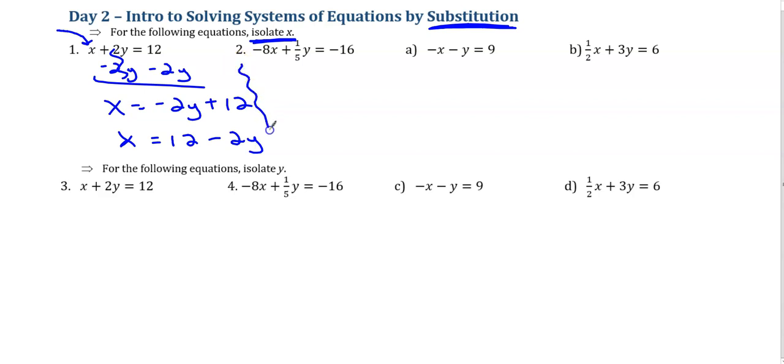Not always going to be that easy. Let's check this next one. Now I've got to get rid of a negative 8 and a 1/5 y. Since the 1/5 y is connected with addition and subtraction, I'm going to get rid of that first. So minus 1/5 y from both sides. Negative 8x equals negative 1/5 y minus 16.